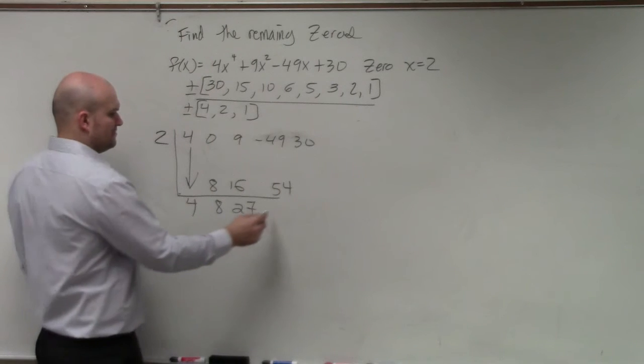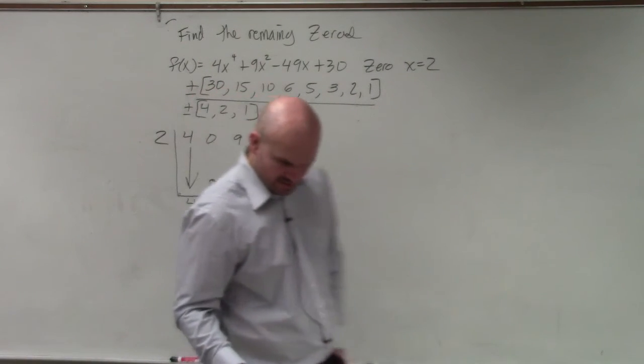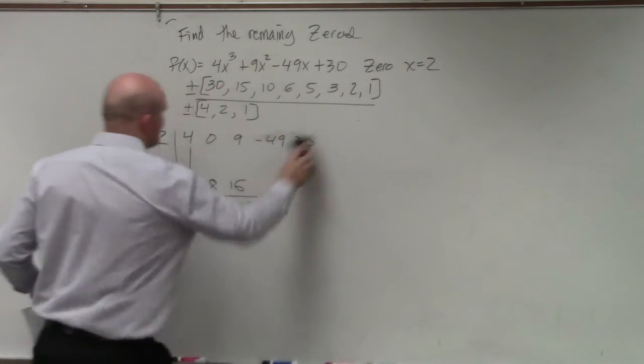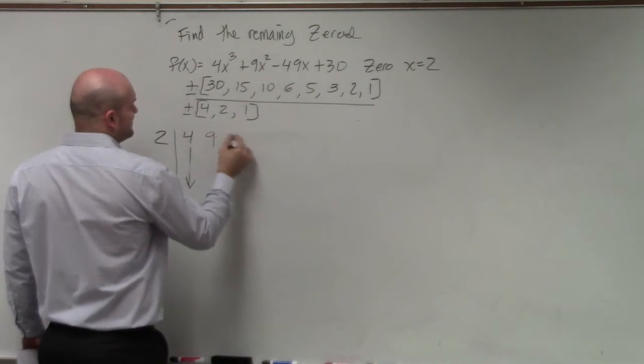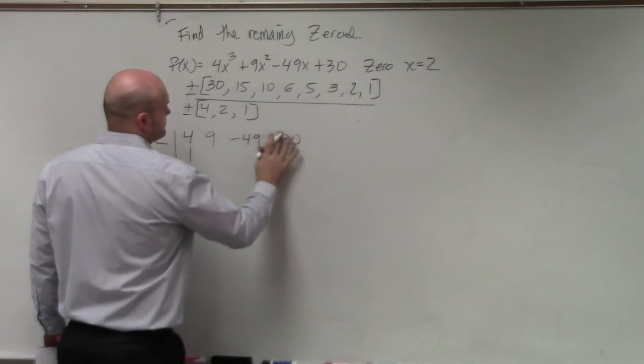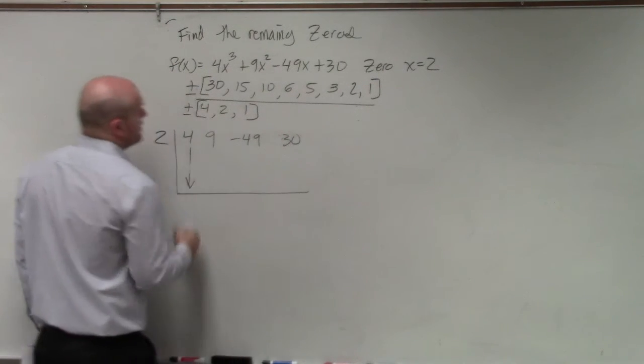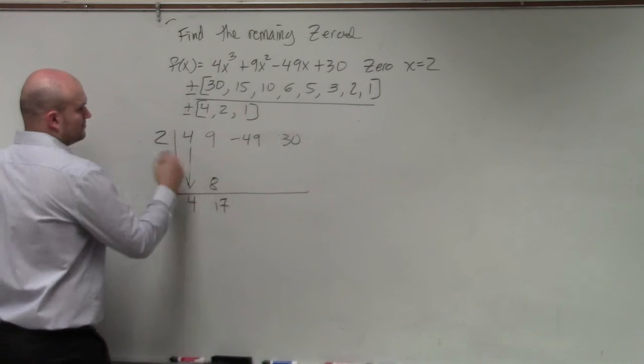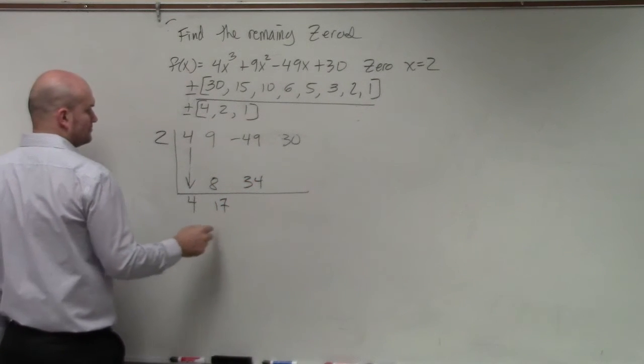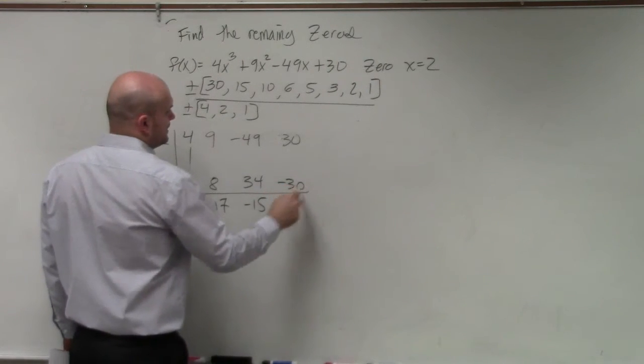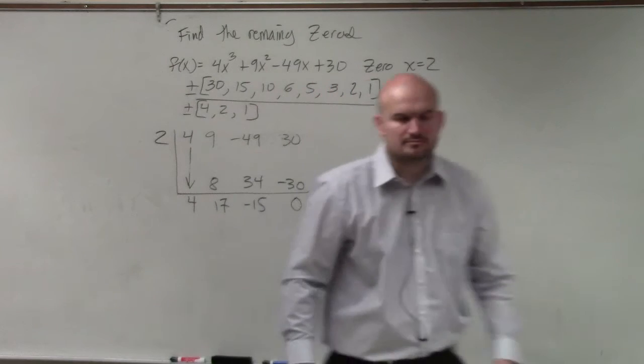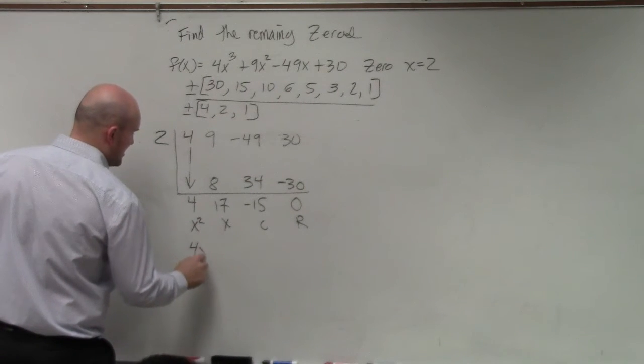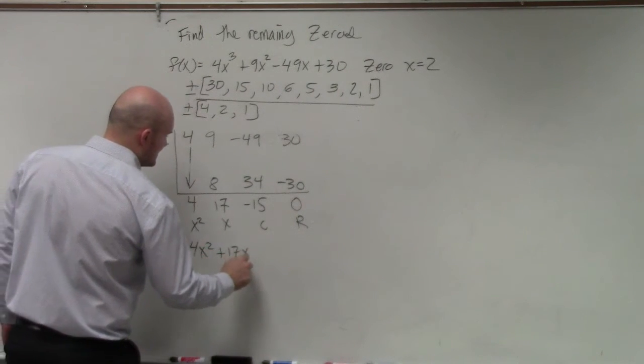Positive 34. Negative 49 plus 34 is negative 15. Negative 15 times 2 is negative 30. Negative 30 plus 30 is 0. What the heck did I do wrong here? Oh, my bad. I wrote that wrong. I was like, I didn't. Sorry about that, guys. I'm sorry, I was like you got the right answer the first time. No, I'm sorry that was x to the fourth. I wrote the problem down wrong. You bring down the four. I'm sorry. So again remember this is your remainder, constant, linear and quadratic. So we have 4x squared plus 17x minus 15.